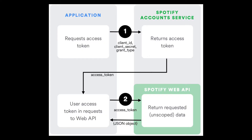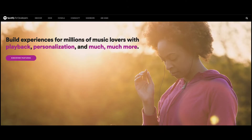Getting data from the Spotify API is a two-step process. We need to get an access token, and with the token we can make requests to the web API. To use the web API, you need to create an account — you can create one for free. Before requesting data, we need to register the application. This is not necessary if you are not using user data, but there are limitations if you do not.